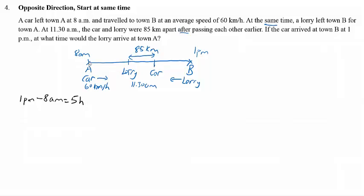That means the car takes 5 hours to travel from A to B. We also know that the speed of the car is 60 km per hour. So 60 times 5 is 300 km, and 300 km represents the total distance between A and B.